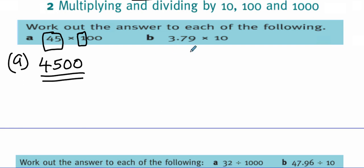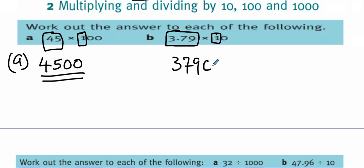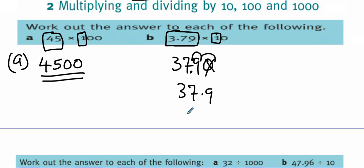How about 3.79 times 10? Ignore the decimal point, just do 379 times 1, you get 379. Then put this zero next to it and count how many decimal places are here — we have two decimal places. So count two numbers from the right, then put a decimal point there. The answer is 37.9, because we cancel that zero.